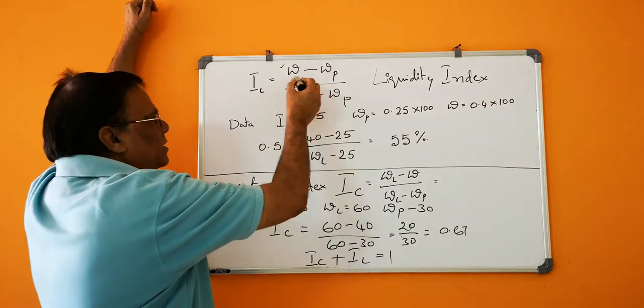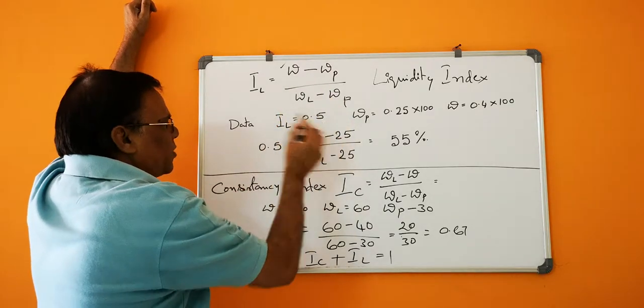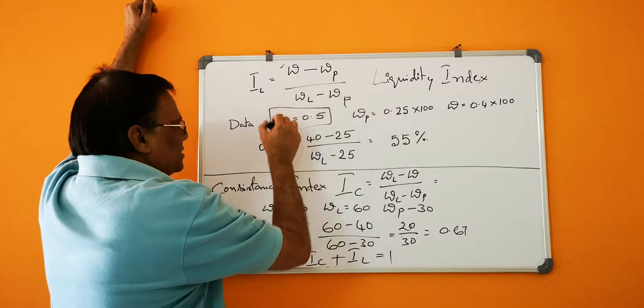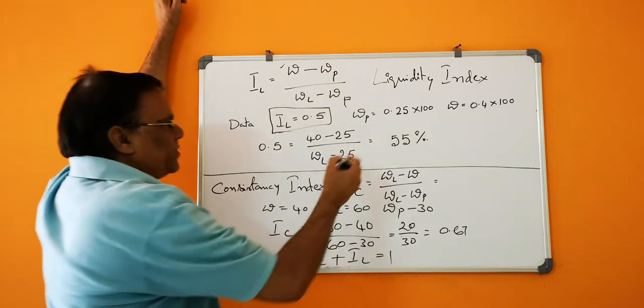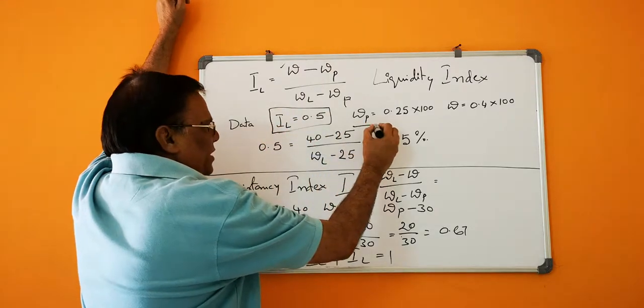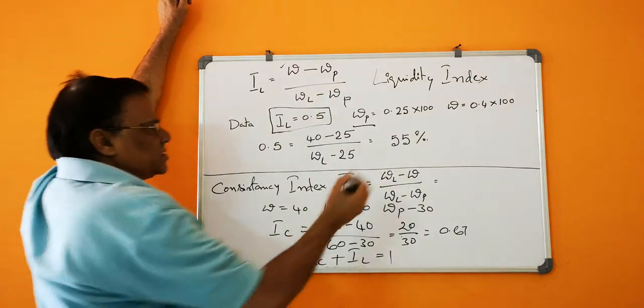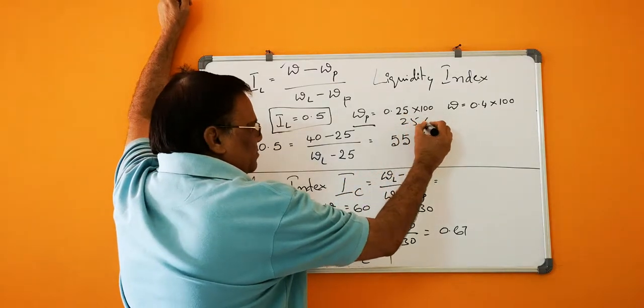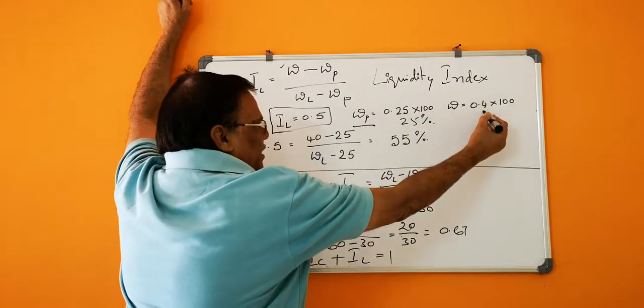If IL is 0.5, IL is given and if it is 0.5, WP means plastic limit is 25% in percent. And the natural water content is 40%.